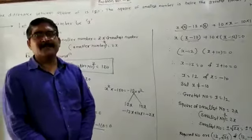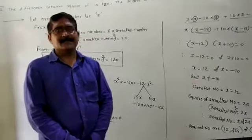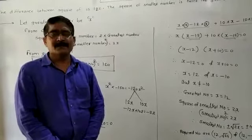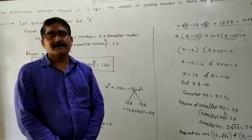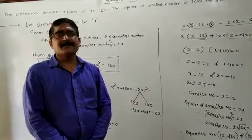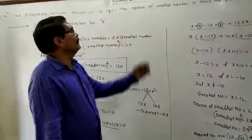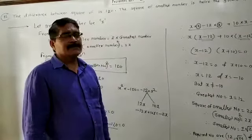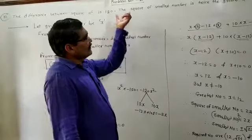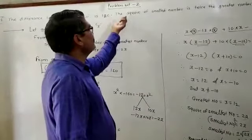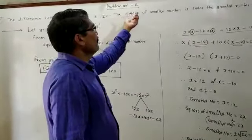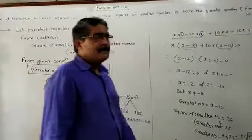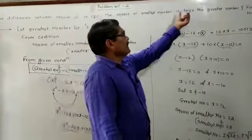One number is the smallest and another number is the greatest. The difference between the squares of the two numbers is given — the biggest number squared minus the smallest number squared is equal to 120. You have to see what conditions are given. The square of the smallest number is twice the greatest number.